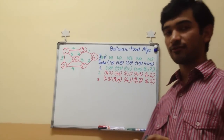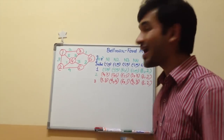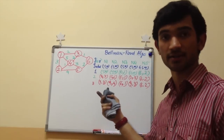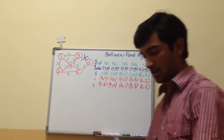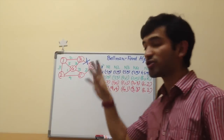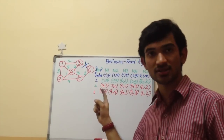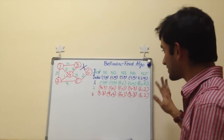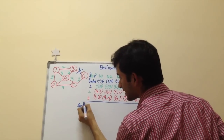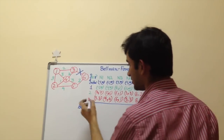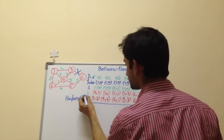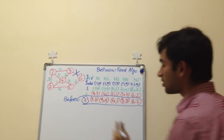The next part of the Bellman-Ford algorithm covers what happens when a connection breaks. If this connection between nodes 3 and 6 breaks, what are the alternative distances? What happens to the circuit? So let's suppose this connection breaks. This is what the table looked like before the break happened, and this is the final state before breaking.